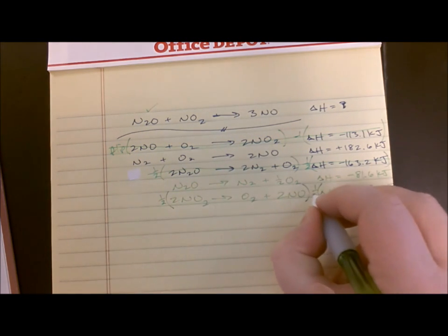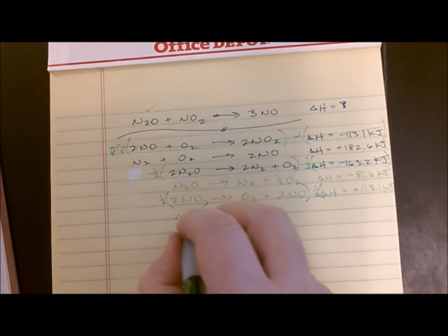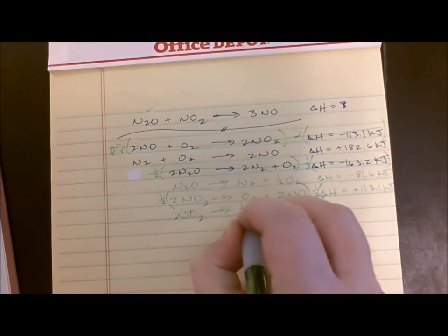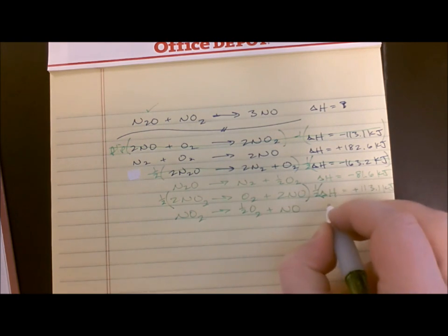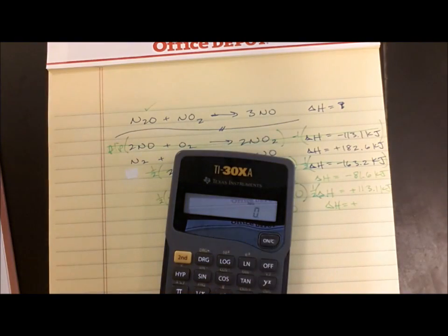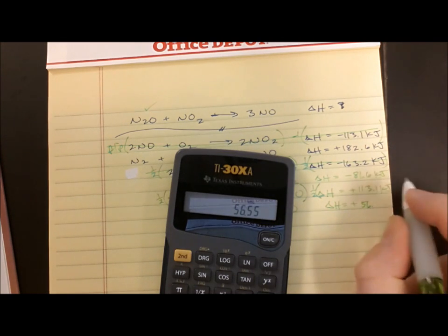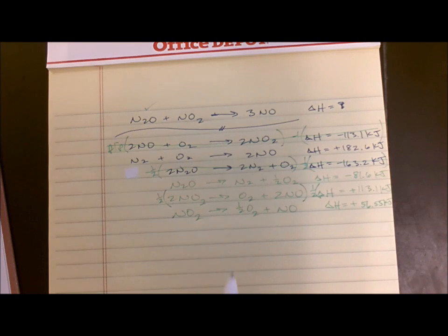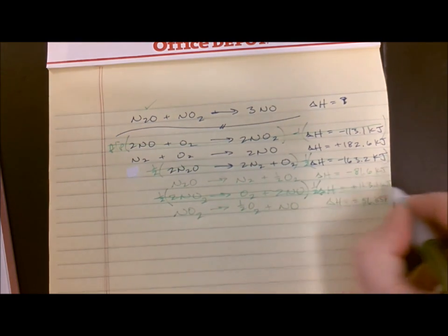So if I multiply this whole thing by one-half, whatever I do to the equation I've got to do to the delta H. So NO2 makes one-half O2 plus NO. And the delta H for this is now positive 113.1 divided by two, now positive 56.55 kilojoules. And I've changed this equation, so I'm going to put a line through it.